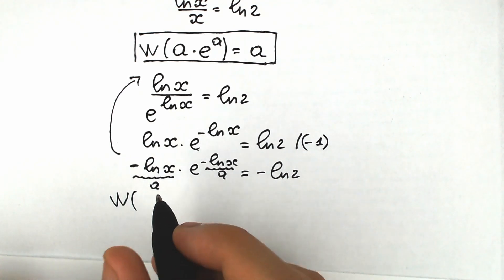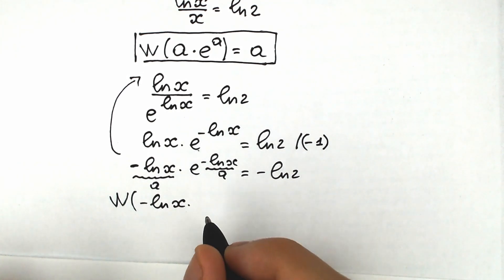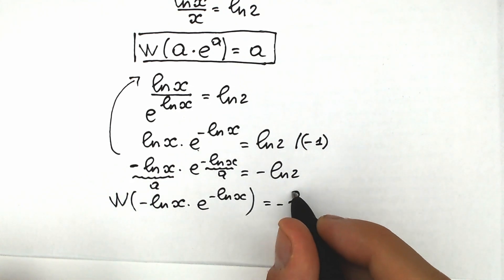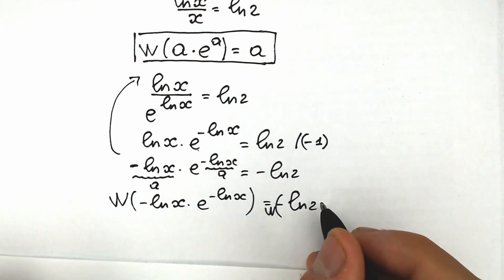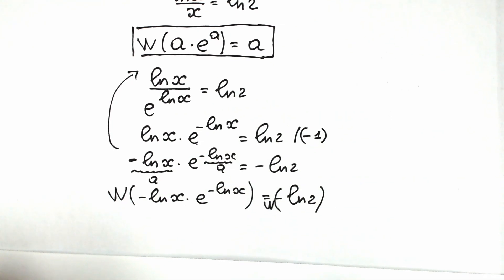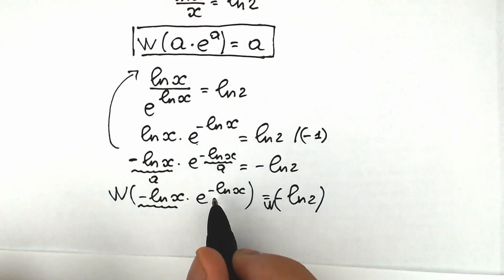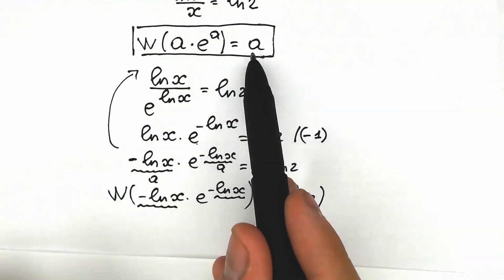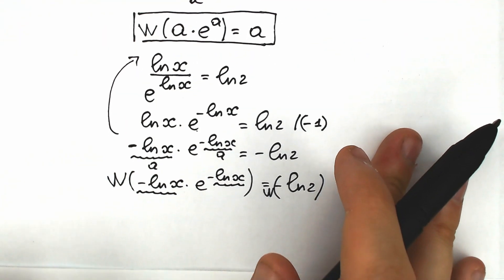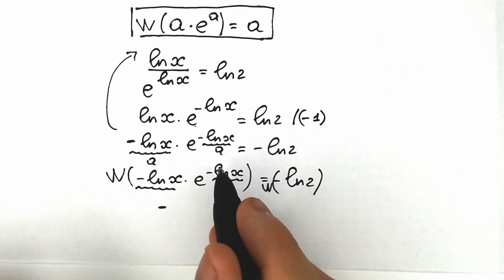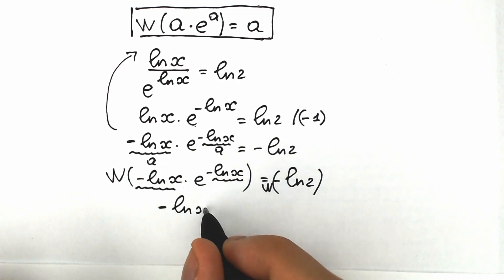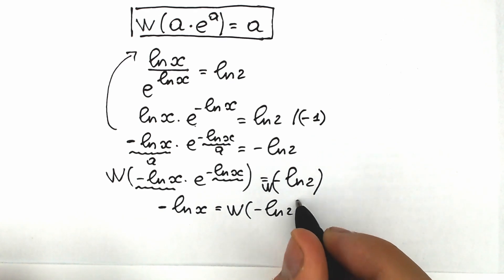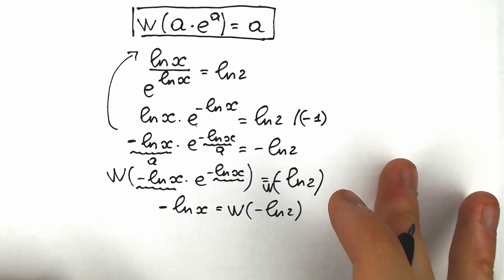So right now we can apply the Lambert W function to the left side expression: Lambert W of minus natural log x times e to the power minus natural log x equals Lambert W of minus natural log 2. The key moment: since minus natural log x appears in both places as the same expression, when we apply the Lambert W function we get only a, which in our case equals minus natural log x. So we write minus natural log x equal to Lambert W of minus natural log 2.